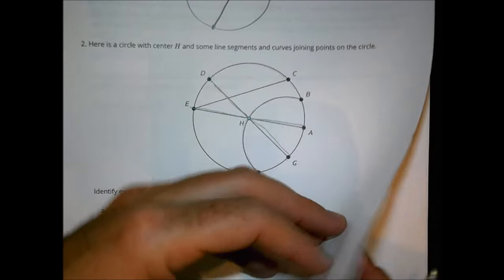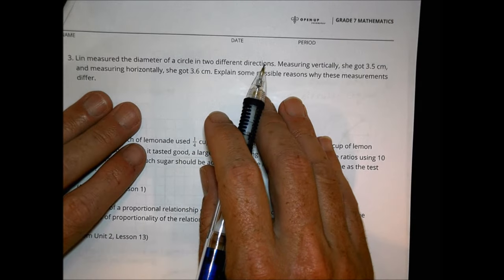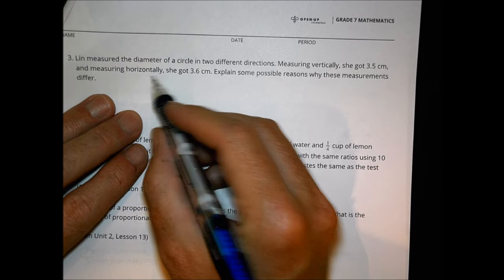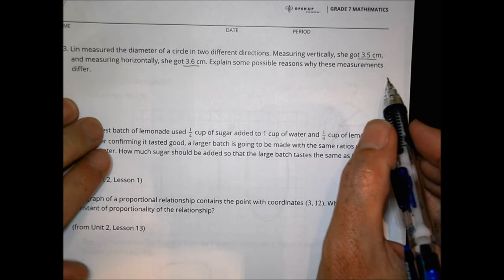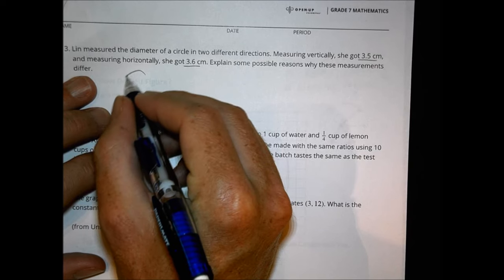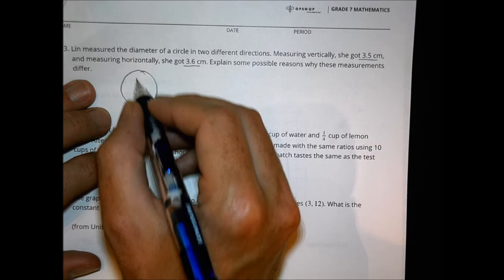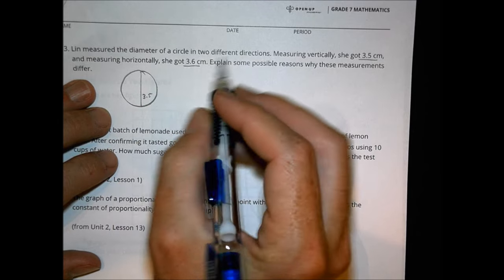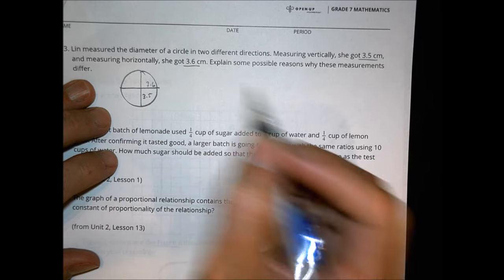Number three: Lynn measured the diameter of a circle in two different directions. Measuring vertically, she got 3.5 centimeters; measuring horizontally, she got 3.6 centimeters. Explain some possible reasons why these measurements differ. She has a circle, went vertically and got 3.5, then went horizontally and got 3.6, and is wondering what might not be right.